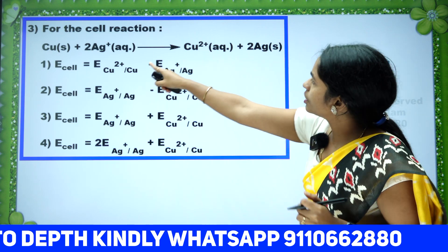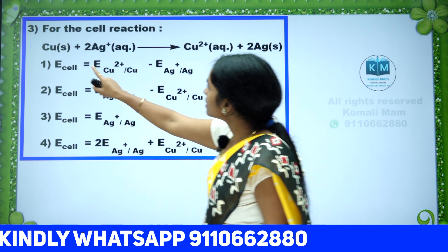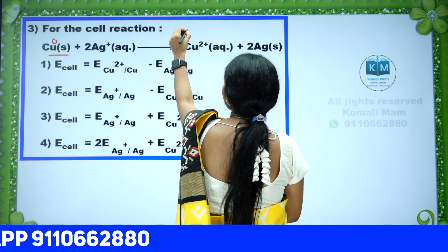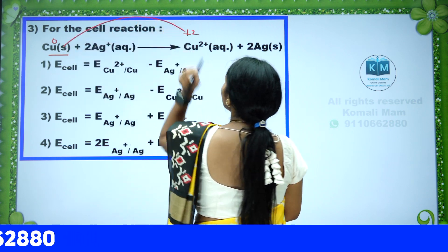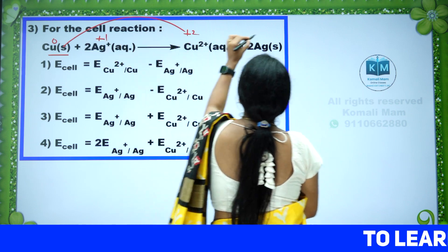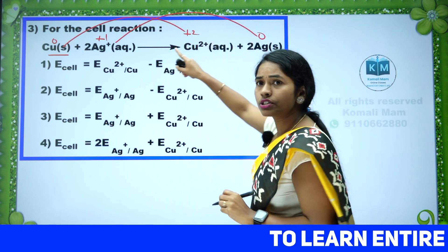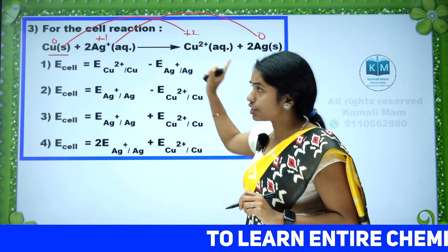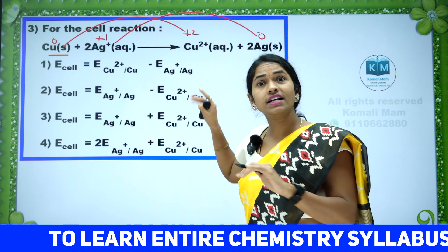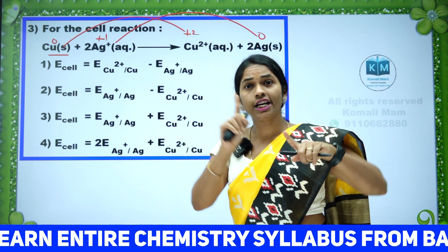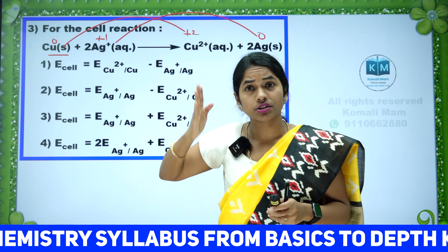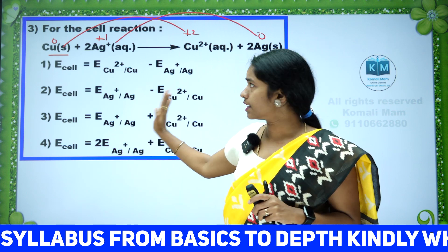For the cell reaction — observe: here copper is in 0 oxidation state, and here it is in +2. From 0 to +2 is an increase in oxidation state, which we call oxidation. Here it is +2 and here it is 0 — a decrease in oxidation state is called reduction. Both oxidation and reduction are taking place simultaneously, which is called a redox reaction.